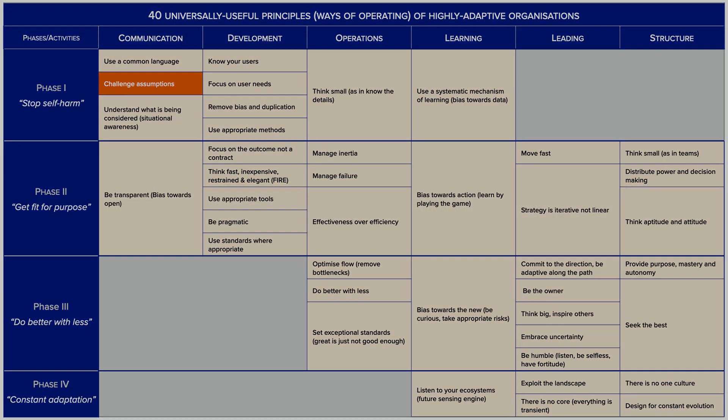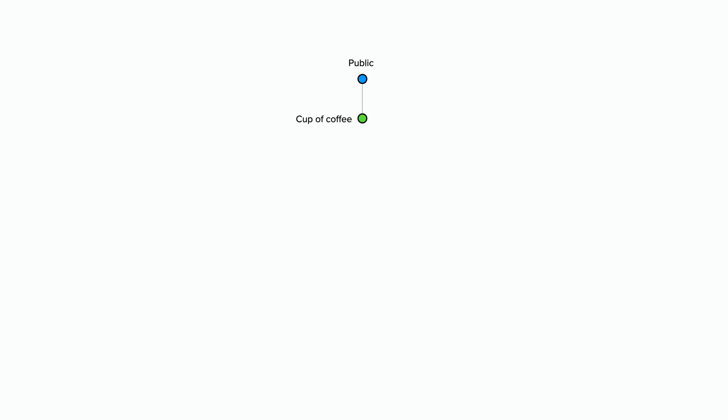To demonstrate the importance of challenging assumptions, let's return to the coffee shop example we looked at earlier. Our users are members of the public who are looking for a great cup of coffee. But a great cup of coffee doesn't appear by magic — it needs lots of other components to make it happen, such as coffee beans and cups. Those coffee beans need water and a coffee machine to turn them into coffee fit for drinking, and the coffee machine needs a power source to run it. This is a very simplified value chain for a coffee shop making great cups of coffee, but it serves our purpose for demonstrating the power of challenging assumptions.